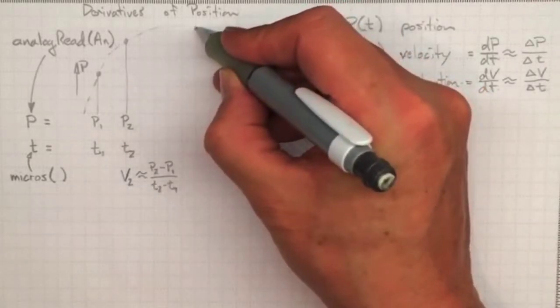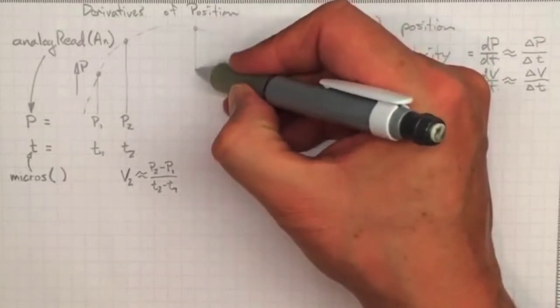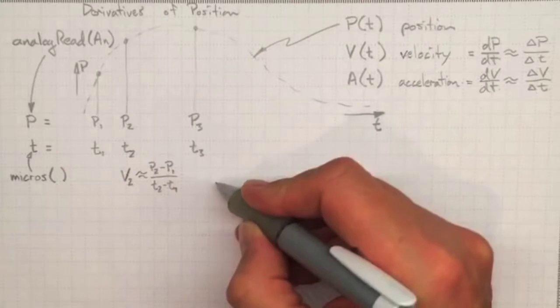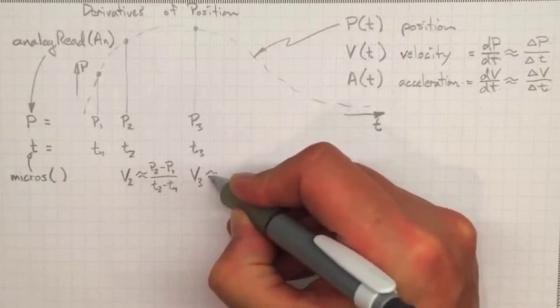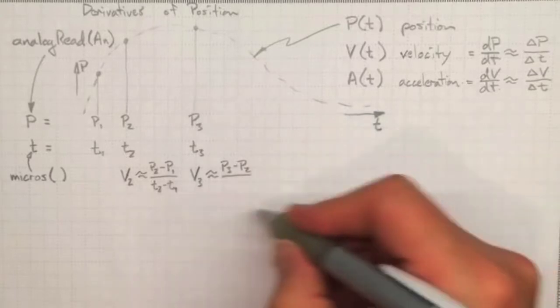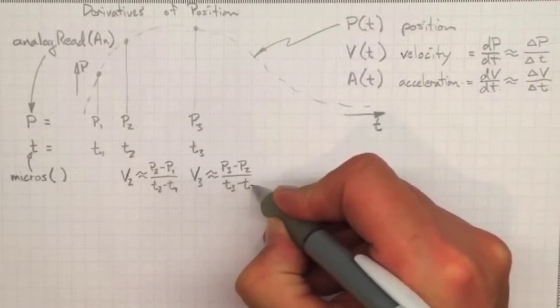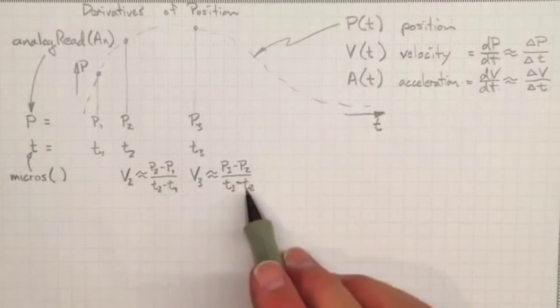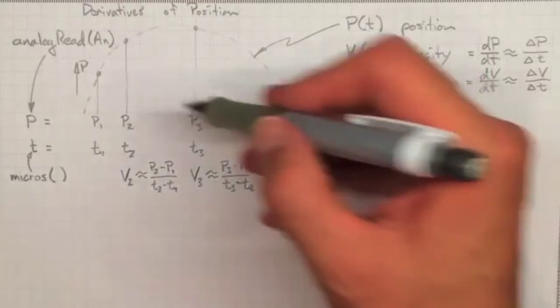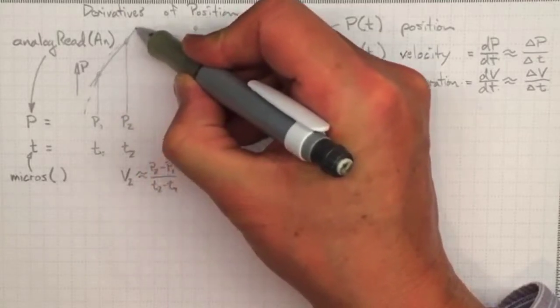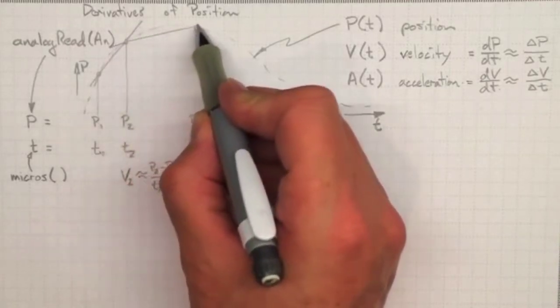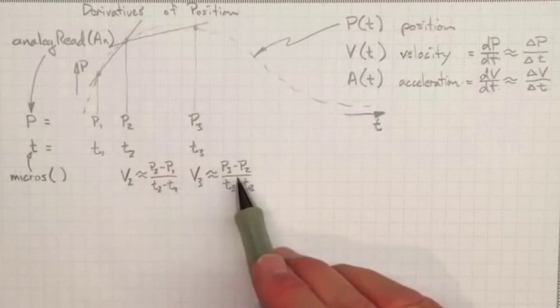So we now know the position and we've got an estimate of what the velocity is. If we go on and take another position measurement, then we've got P3 and we know what time we took that, t3. We can estimate V3 as approximately equal to P3 minus P2 divided by t3 minus t2, and that'll give us a reasonable estimate of what the velocity was at that time. These are just estimates of the derivatives at these different times. We're approximating that as the velocity, and we're approximating here a straight line between those two points as representing the velocity. That's what we're doing when we make this calculation.